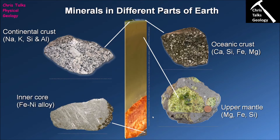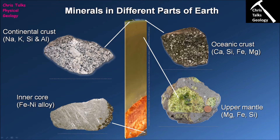Underneath all that we have the core, where we stop having silicate minerals. Instead the core is dominated by iron nickel alloy. We don't have any direct samples of core material because we can't drill down far enough. However, we do have samples from planets destroyed early in the history of the solar system. This particular sample is an iron meteorite made up of metallic iron nickel alloy. It has a very distinctive pattern called Widmannstätten texture, which is commonly seen in iron meteorites, and it represents a sample of another planet's core.